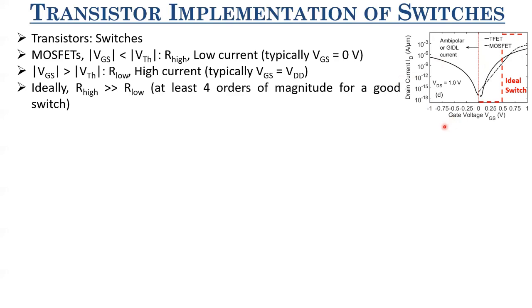Just to give a hint: suppose noise reduces the input voltage below zero — if at minus 0.5 V it gives around 10⁻⁸ A/μm current, it might be interpreted as logic level one, even though you're applying zero volts. The noise-induced negative voltage produces this current. So think about whether this ambipolar current is beneficial or detrimental for digital circuits.